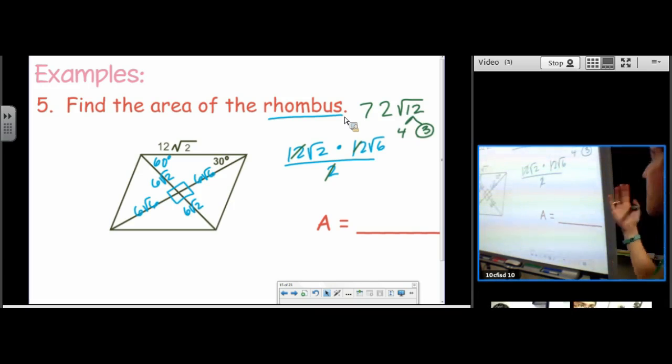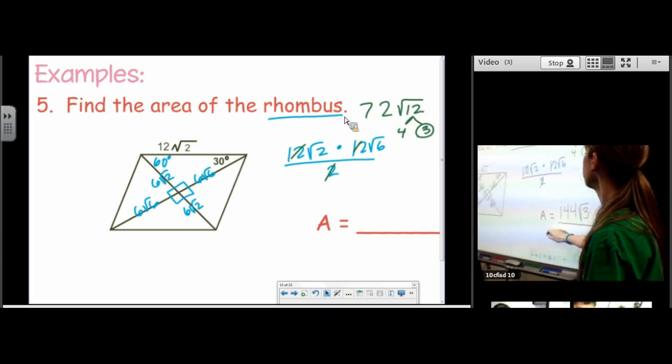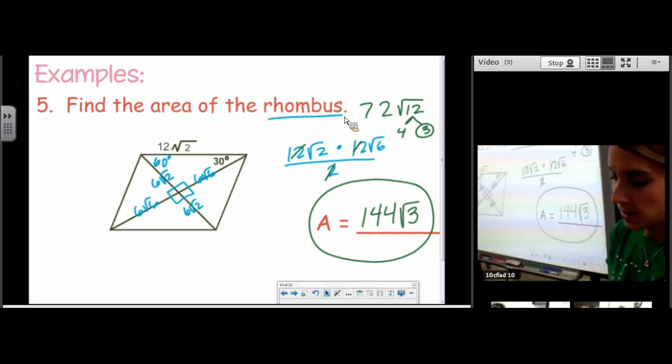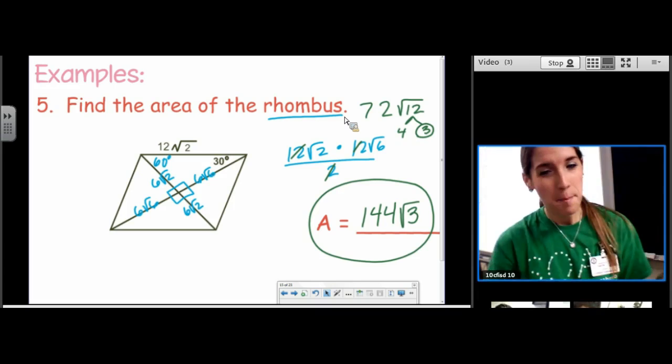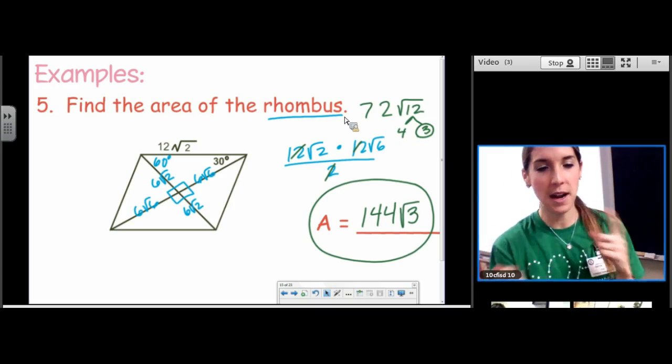So now we're ending up having to double 72. We're going to undo it. So our area is 144 root 3. So we divided by 2. But then when we simplified our radical, a 2 escaped. So we ended up having to double it again. So we kind of undid it.